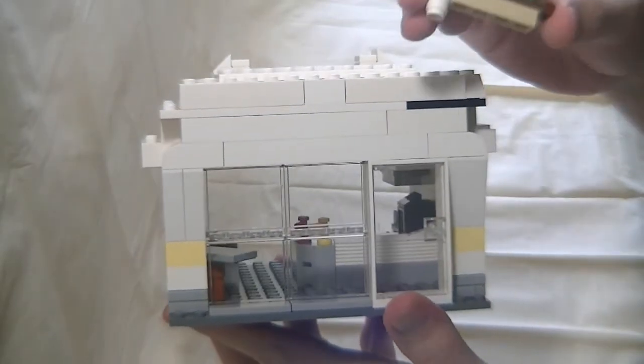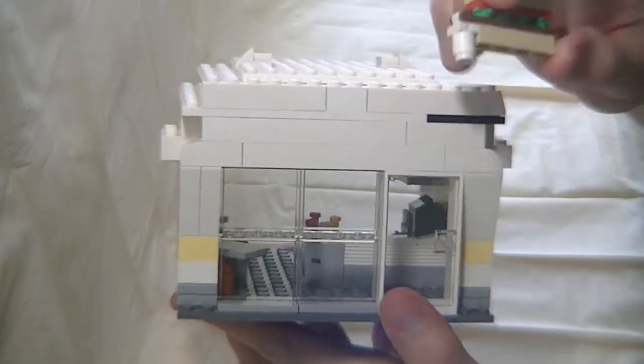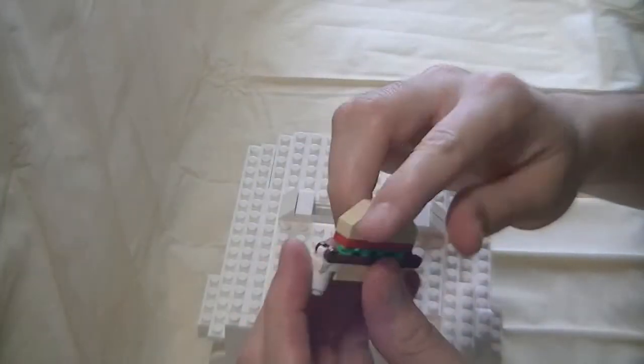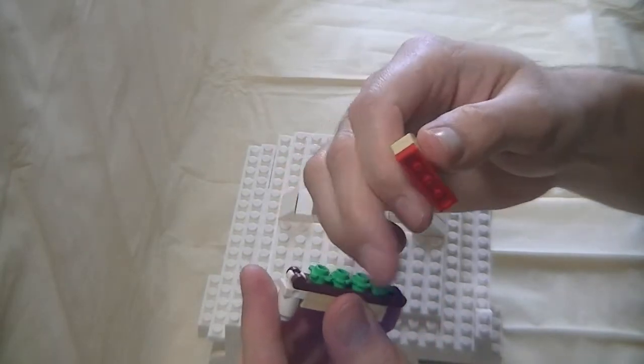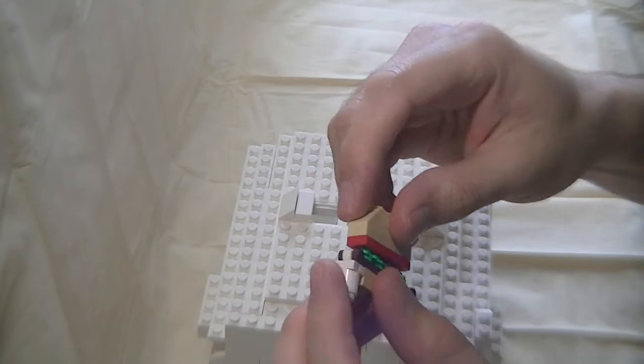This was really fun to build, this little hamburger sign. I used some of those plant pieces to make it look like the lettuce and the meat and tomatoes and the bread.